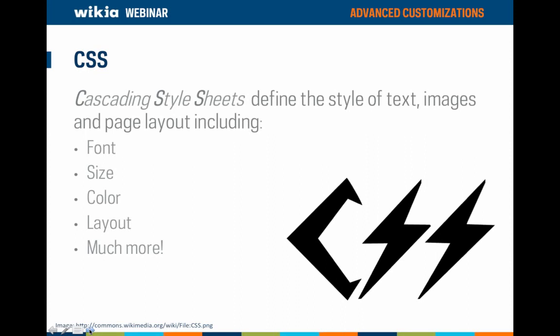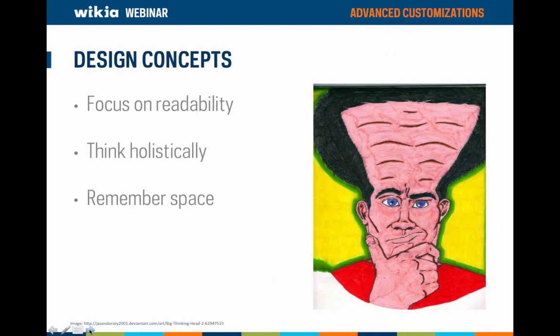CSS stands for Cascading Style Sheets. It interacts with HTML to allow you to stylize text, images, and the layout of your wiki. HTML is the structure of a page while CSS defines the look of the page. Modifying your wiki's CSS is a way to create unique designs for areas beyond the theme designer. CSS is a complex language with lots of intricacies, so today we'll cover the basics.